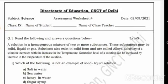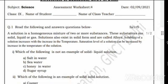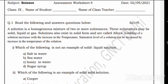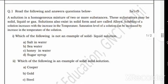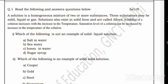Hello guys, welcome back to my YouTube channel. Today we'll cover Class 9 Assessment Worksheet Number 4 for Science subject. Question 1: Read the following and answer the questions below. A solution is a homogeneous mixture of two or more substances.